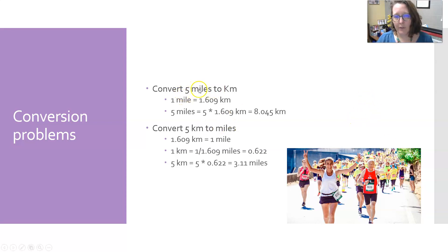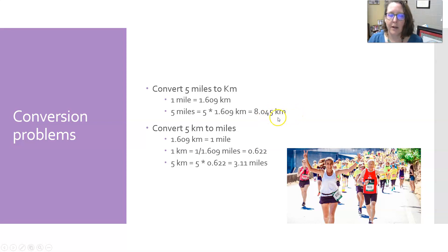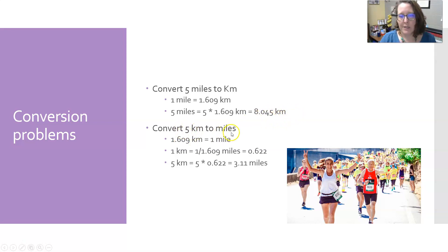For example, converting five miles to kilometers: if one mile is 1.609 kilometers, then five miles is simply five times more — so five times 1.609 is 8.045 kilometers. What about five kilometers in miles? A lot of people run 5Ks — you should know it's about three miles.